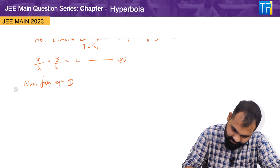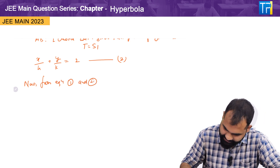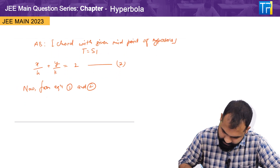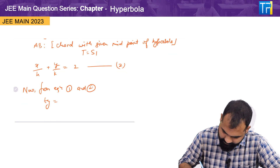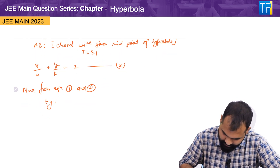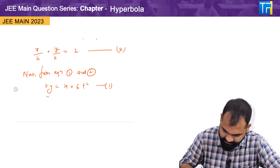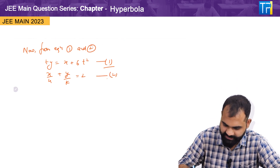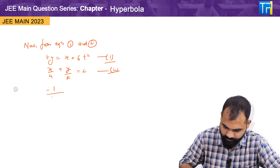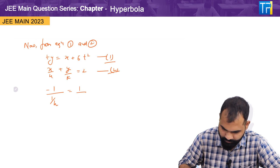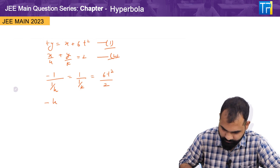From equation one, ty = x + 6t², and equation two, x/h + y/k = 2, we compare coefficients. This gives us -1/h = 1/(kt) = (6t²)/2. Solving, we get -h = kt = 3t².